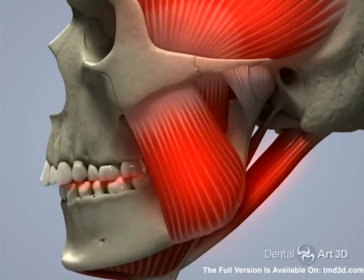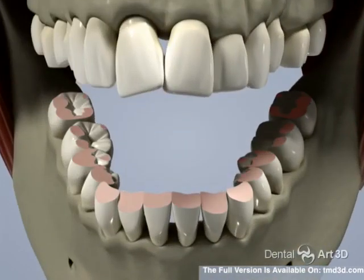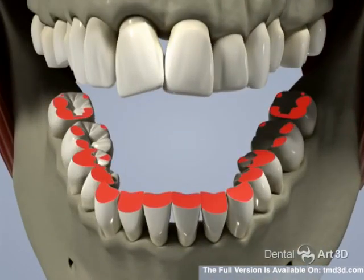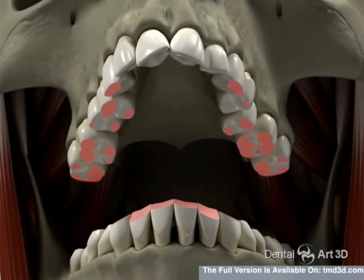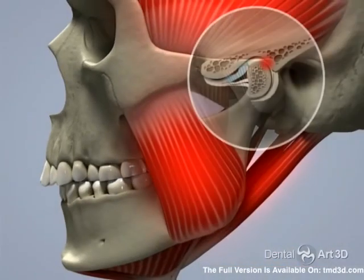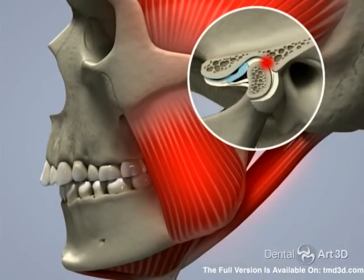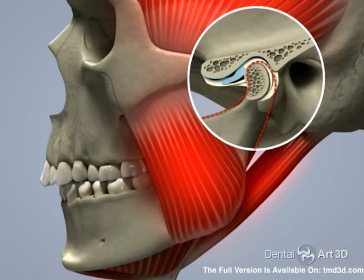As a result, the teeth become even shorter, the lower jaw shifts distally even further, and the vertical of the bite decreases. In time, joint degeneration occurs. The joint becomes deformed, and the ligaments of the joint become damaged.